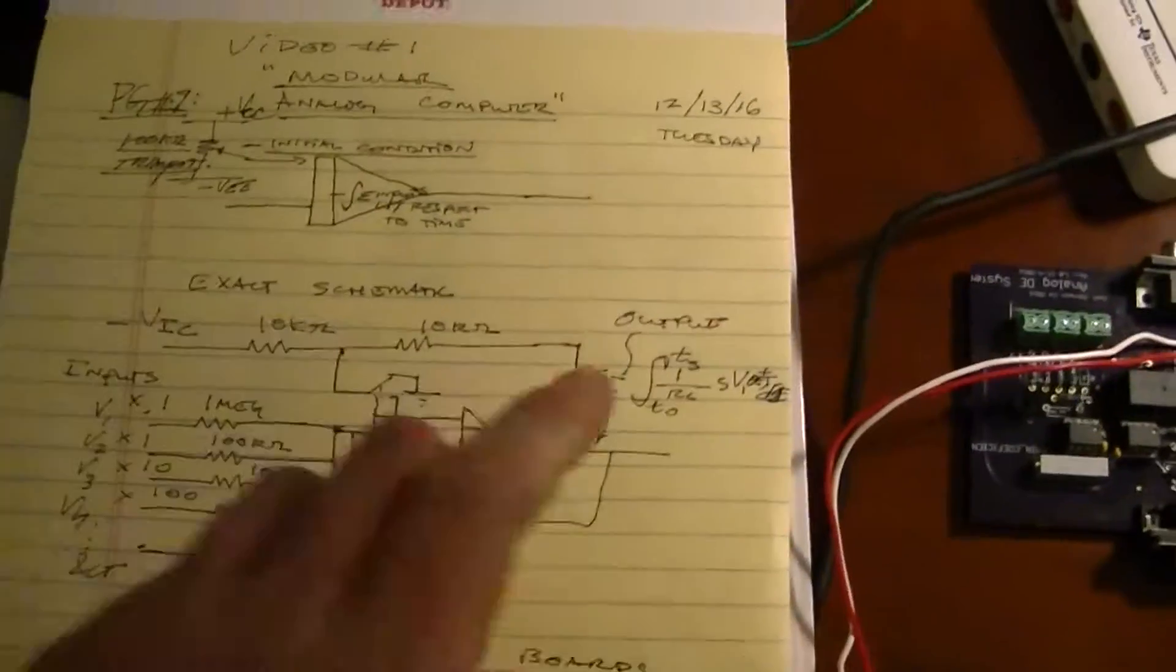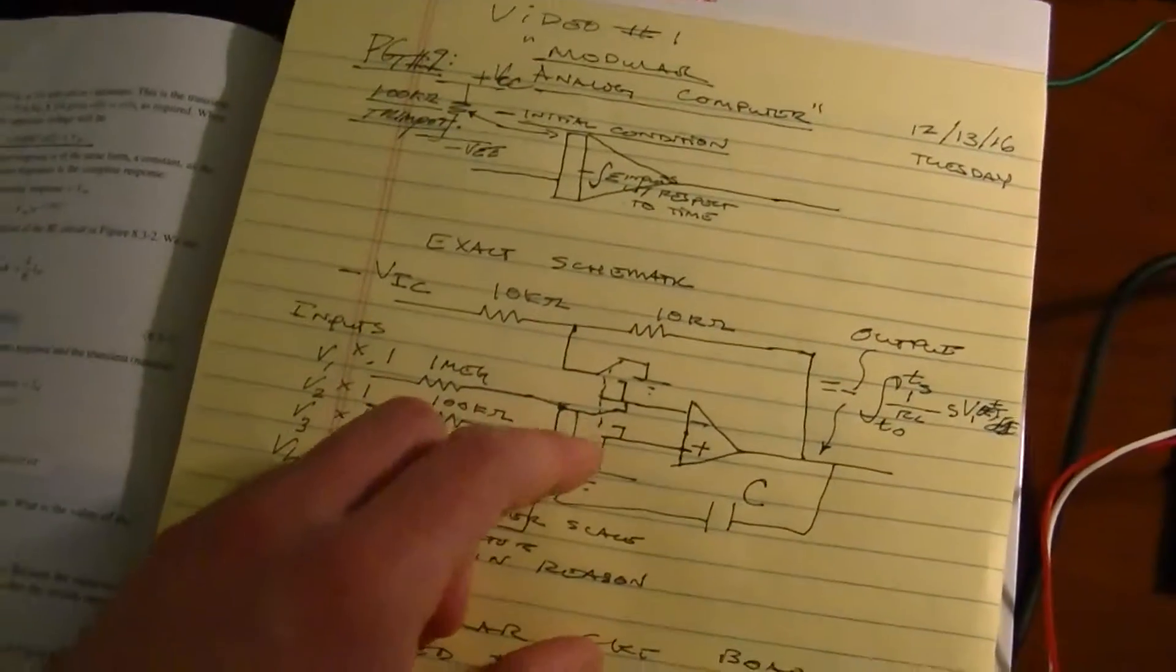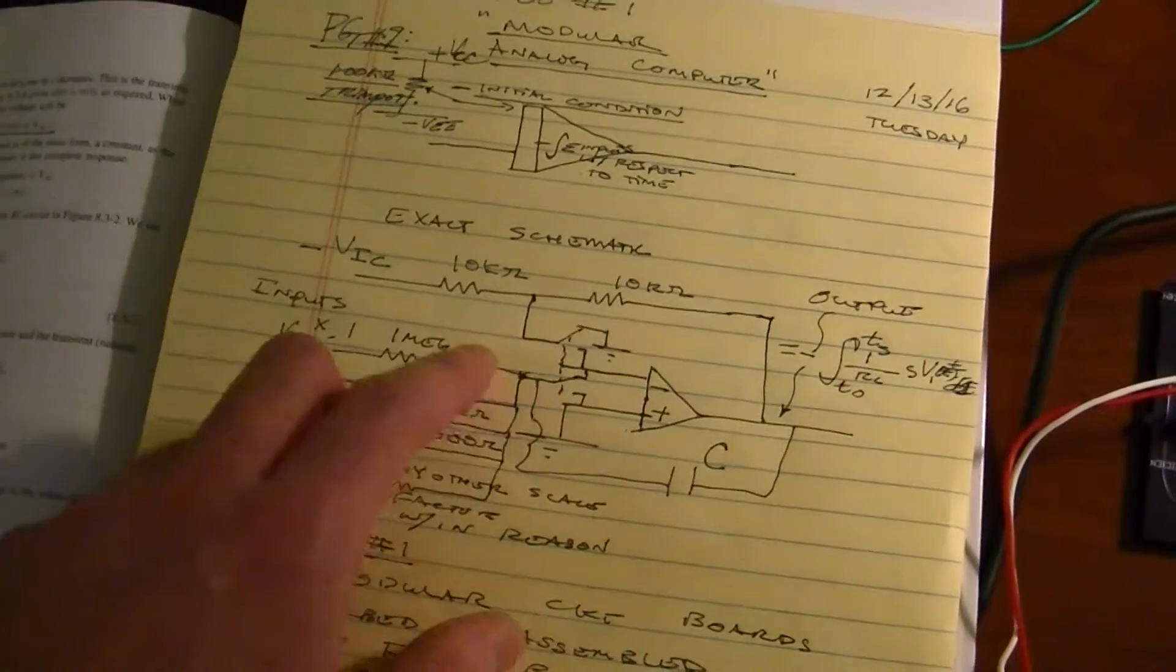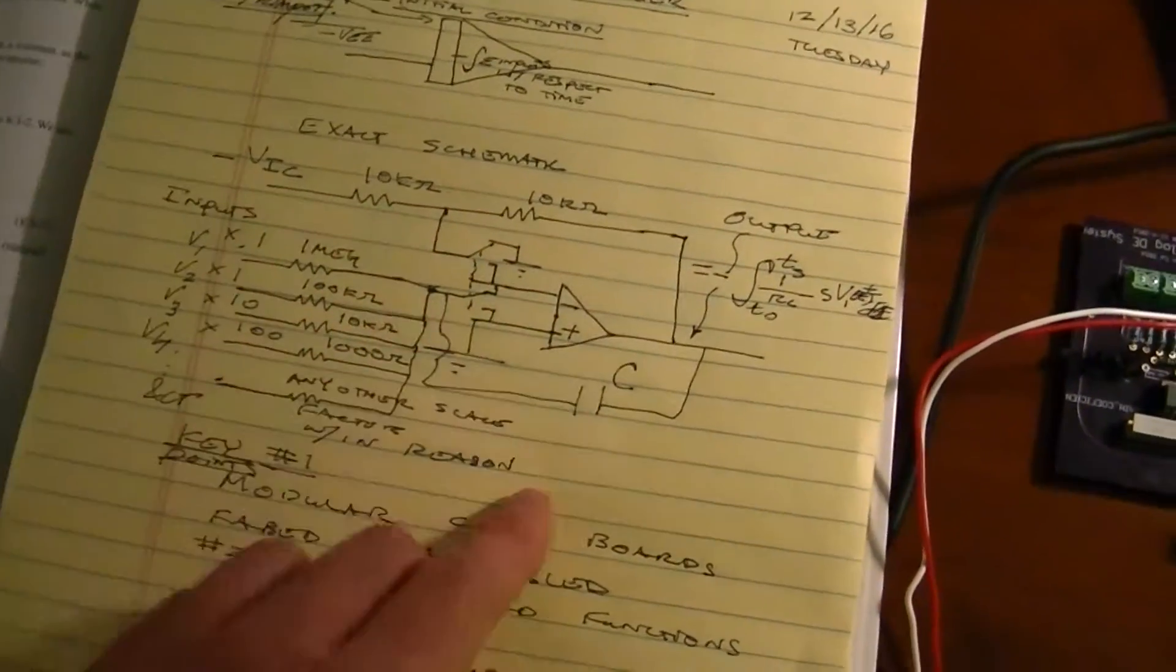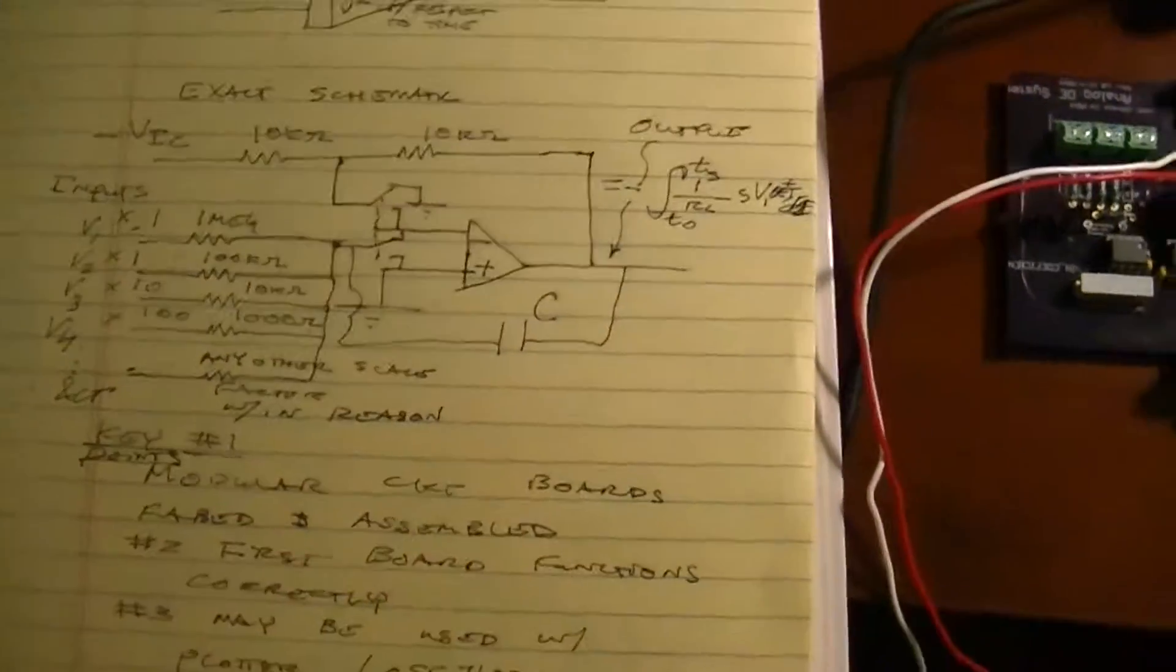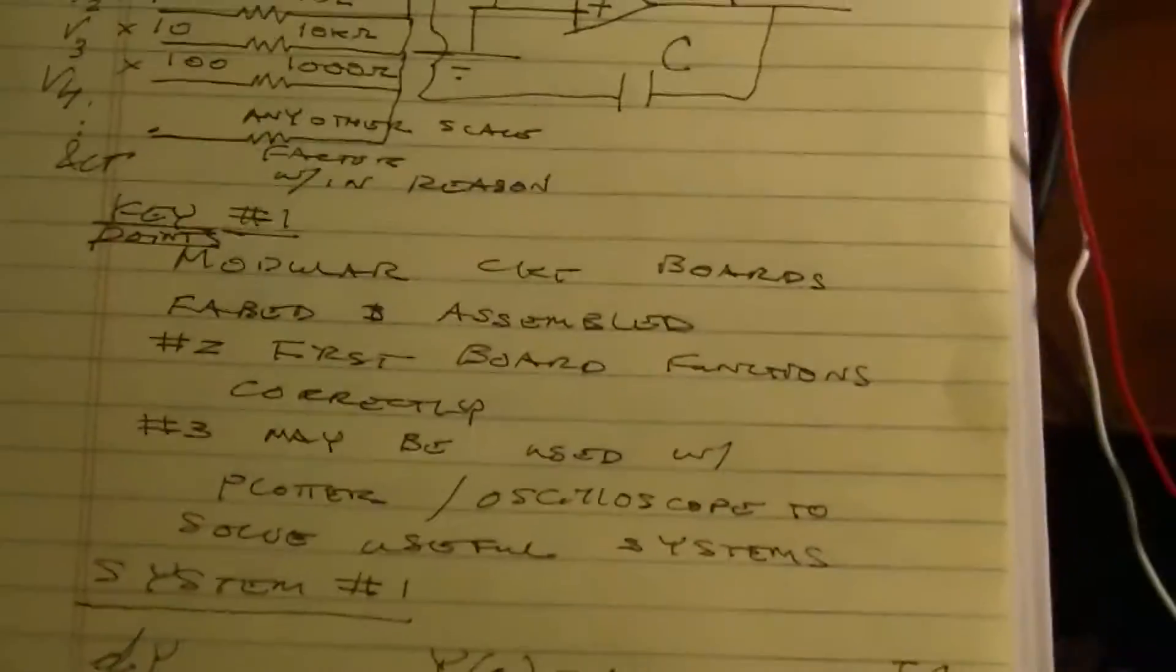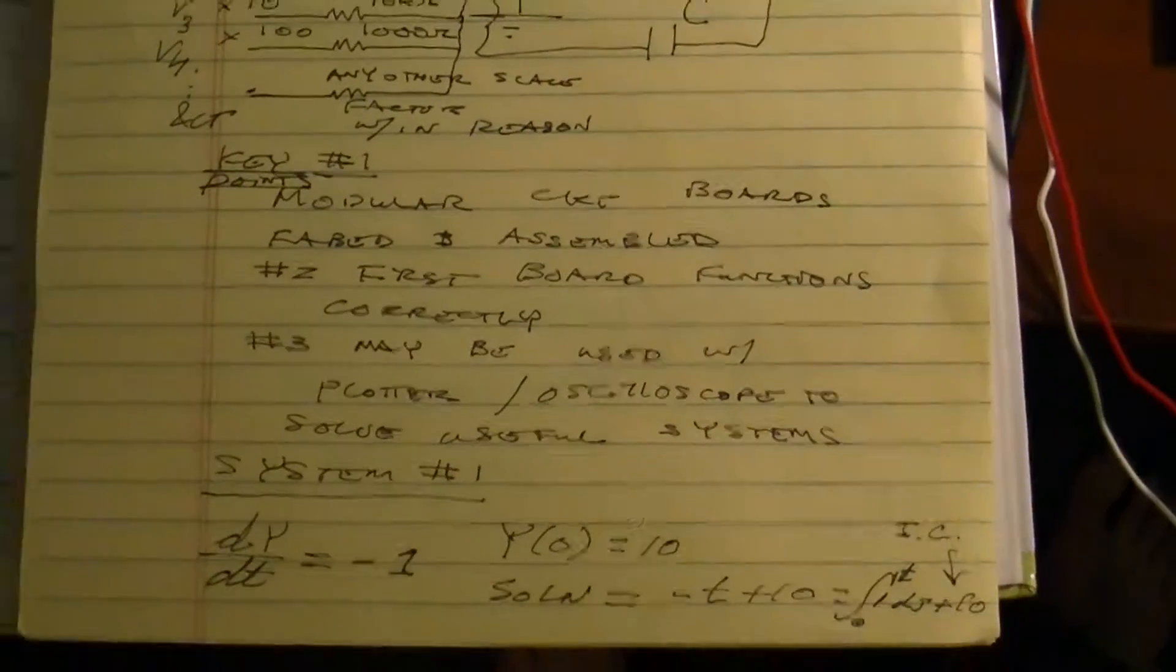Effectively, it performs the integral. Now, when it's in the opposite position on both of these, it puts the negative initial condition across this capacitor. And so, the relay can control the integrator. And that's a cornerstone of what an analog computer can do.